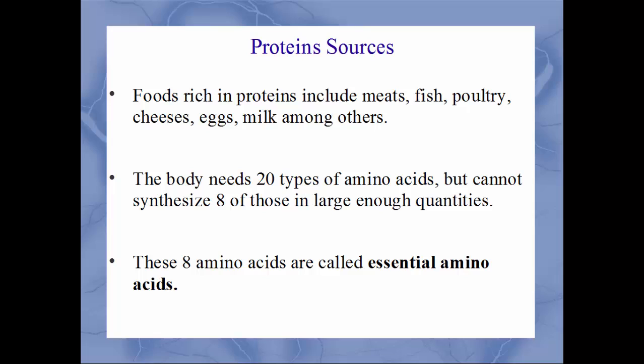Foods that are rich in proteins include meats, fish, poultry, cheese, eggs, milk, and many others. The body needs about 20 types of amino acids, but there are eight that the body can't make. So these eight are called essential amino acids.